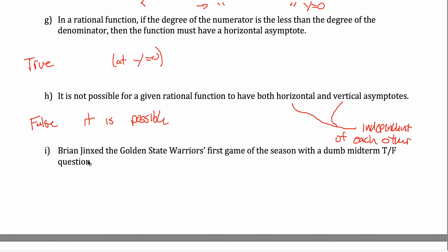Then there's a bonus true-false statement — something about the Warriors. You can put true or false; it doesn't matter. This is because the points don't add up evenly. The problem is worth 25 points, and if each of the true-false statements is worth three points there's one point left over, so everybody gets the points. That's the end of the first problem.